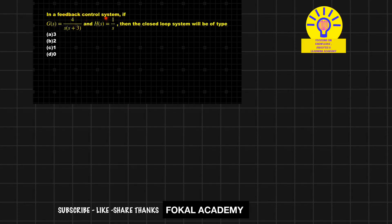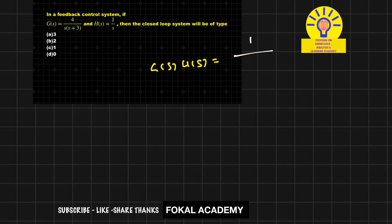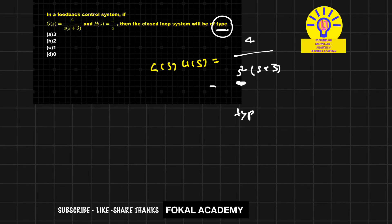In this problem, for a control system, G(s) = 4/s and feedback H(s) = 1/s. For the closed-loop system, find G(s)·H(s): that equals 4/[s²(s+3)]. The number of poles at the origin determines the system type. There are two poles at the origin, so this is a Type 2 system. From the options, option B is the correct option.